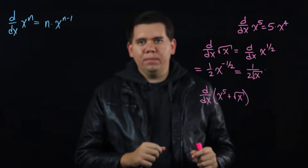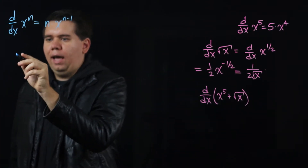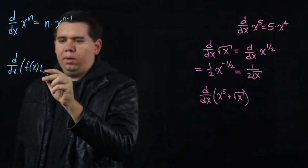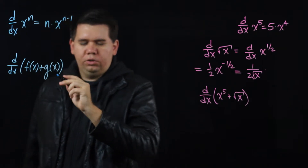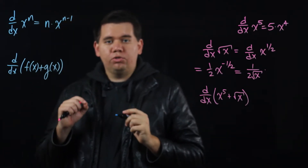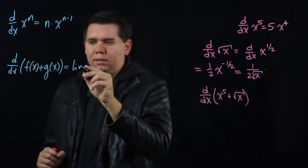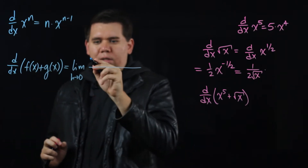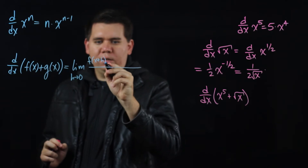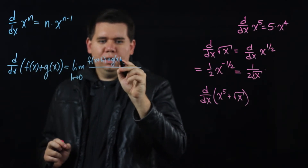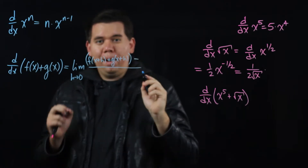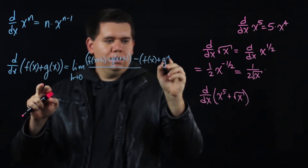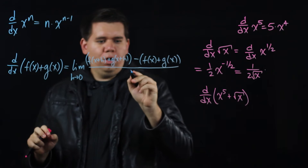In order to figure out how to do this kind of problem, let's ask in general: how do we find the derivative of f(x) plus g(x)? Let's plug it into the derivative definition — the limit as h goes to 0 of: plug in x plus h, that becomes f(x+h) plus g(x+h), minus plug in x, which gives f(x) plus g(x), all over h.